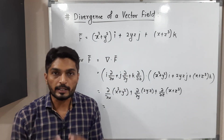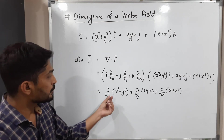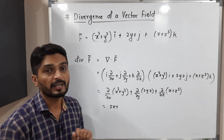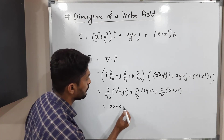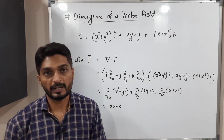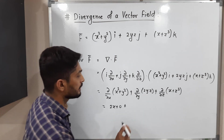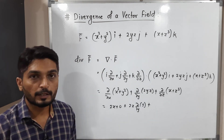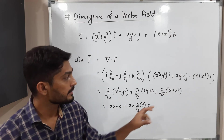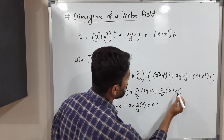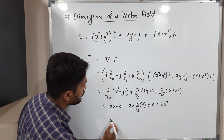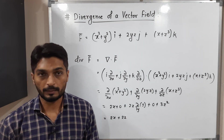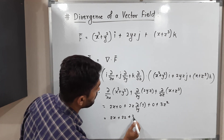Evaluating each term: the derivative of x² is 2x, and y² is constant with respect to x so its derivative is 0. For the second term, 2z is constant with respect to y, so we get 2z·(∂y/∂y) = 2z·1 = 2z. For the third term, x is constant with respect to z (derivative 0), and the derivative of z³ is 3z². So the result is 2x + 2z + 3z².